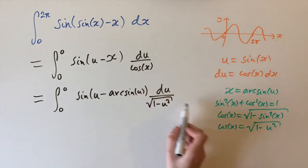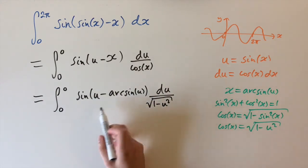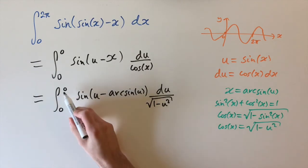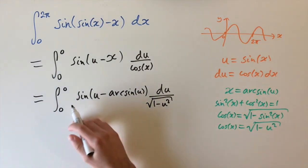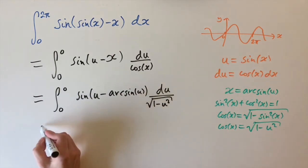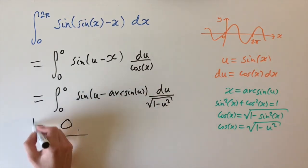And although this is a really horrible integrand, we don't need to evaluate it because we have these limits that are the same. So for any limits, if it's from a to a, it's always going to be 0. Because we're trying to find the area where one of the lengths is 0. So our answer is very nice. It's just 0. And that's our solution.